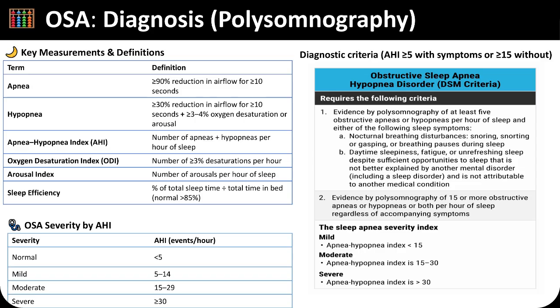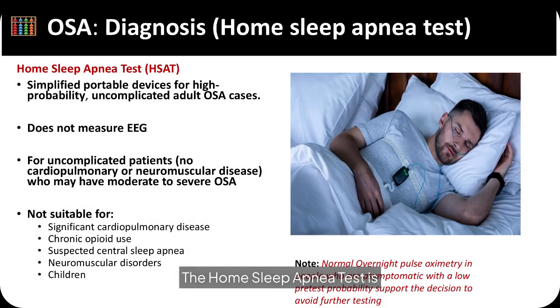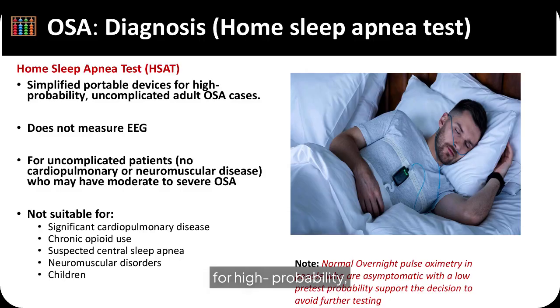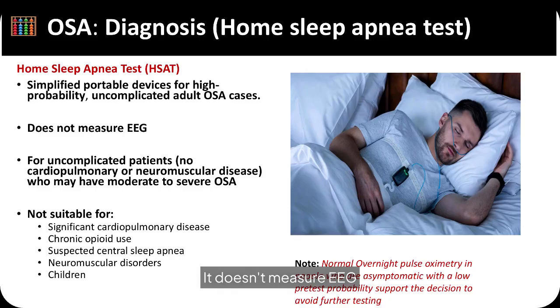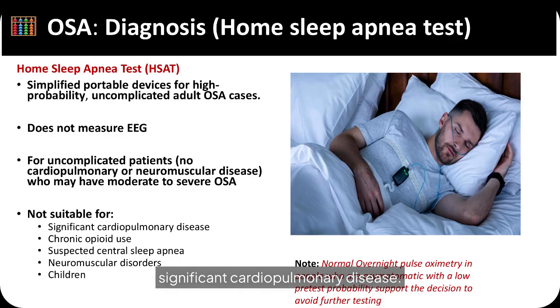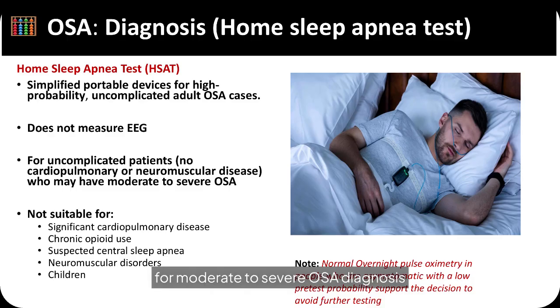Additional measures like the oxygen desaturation index, arousal index, and sleep efficiency provide insight into nocturnal hypoxemia and sleep quality. The home sleep apnea test is a simplified diagnostic tool for high-probability, uncomplicated OSA cases. It doesn't measure EEG and is unsuitable for patients with significant cardiopulmonary disease, but is a convenient option for moderate to severe OSA diagnosis in specific populations.